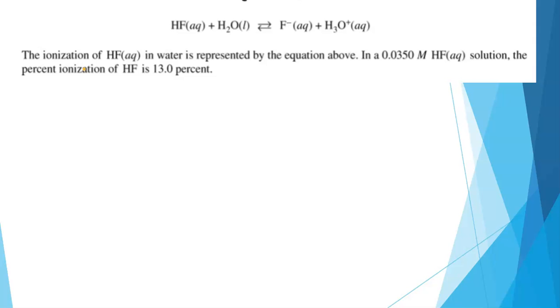The ionization of HF in water, hydrofluoric acid, is represented by the equation above. HF plus H2O is in equilibrium with fluoride ion and hydronium ion. And we're told, in a 0.0350 molar HF solution, the percent ionization of HF is 13%. Clearly, this is an acid-base problem.